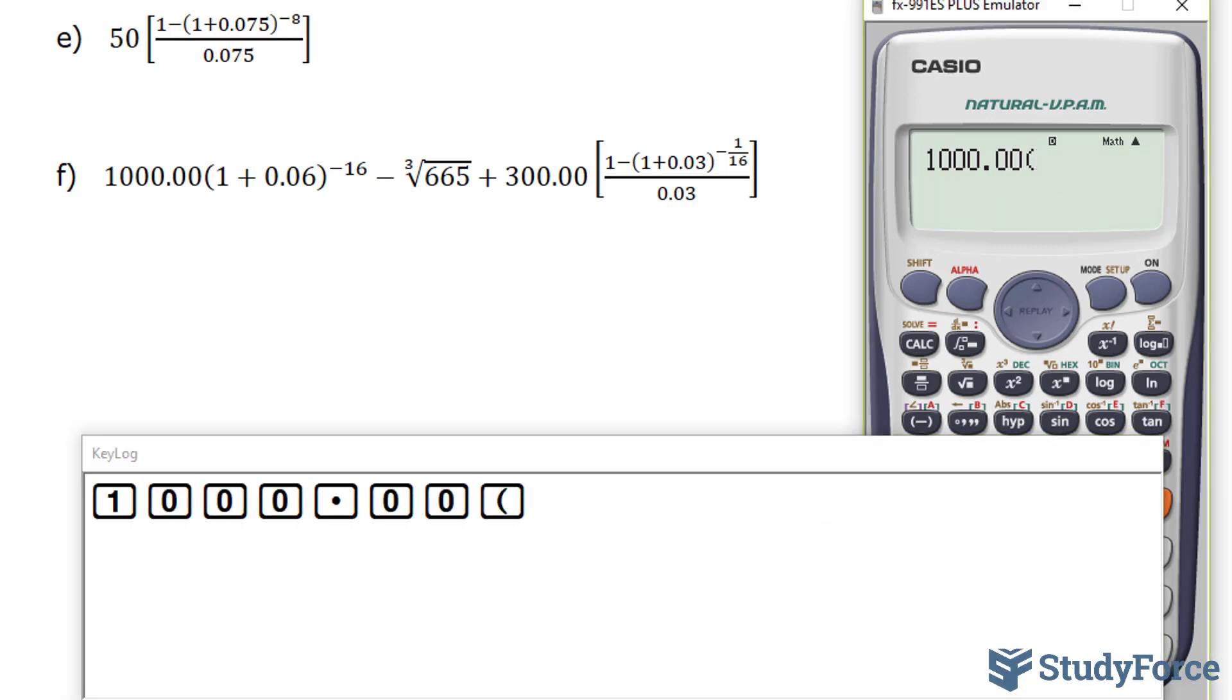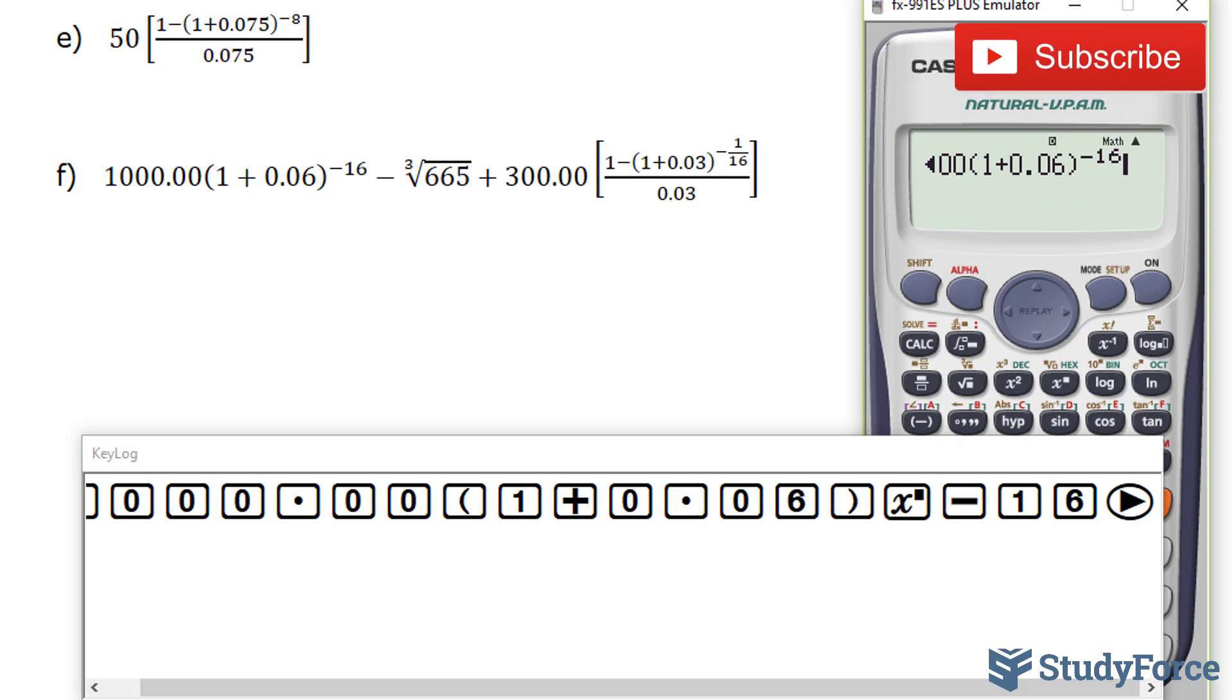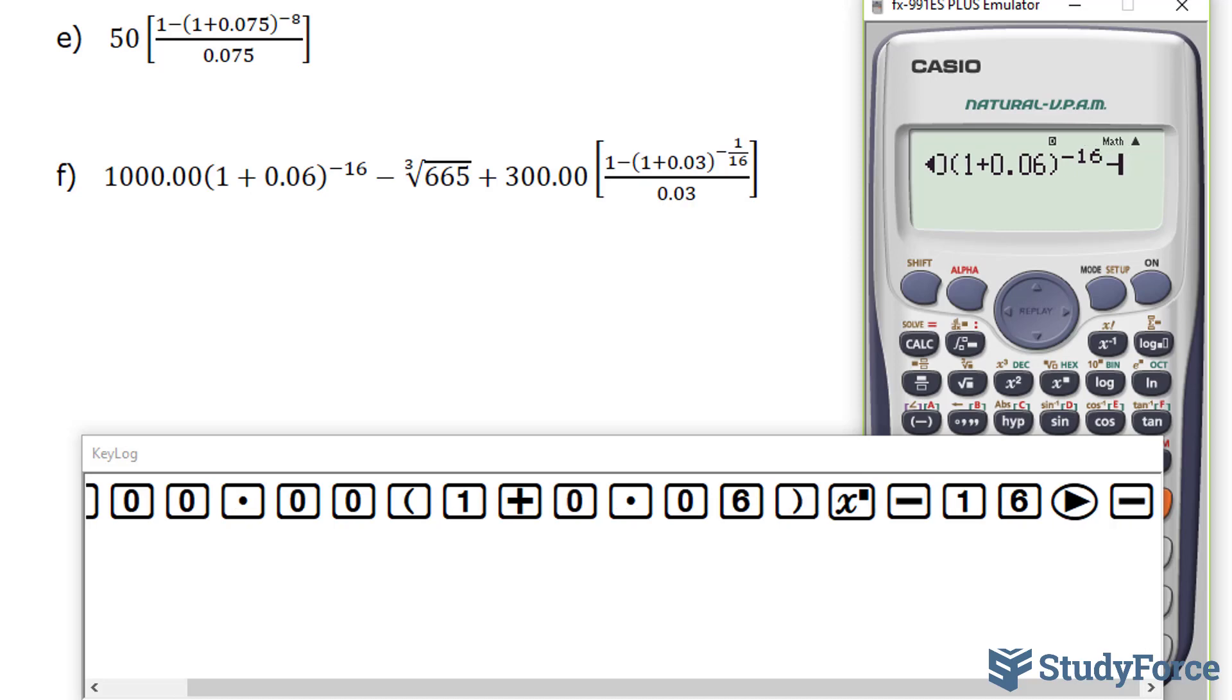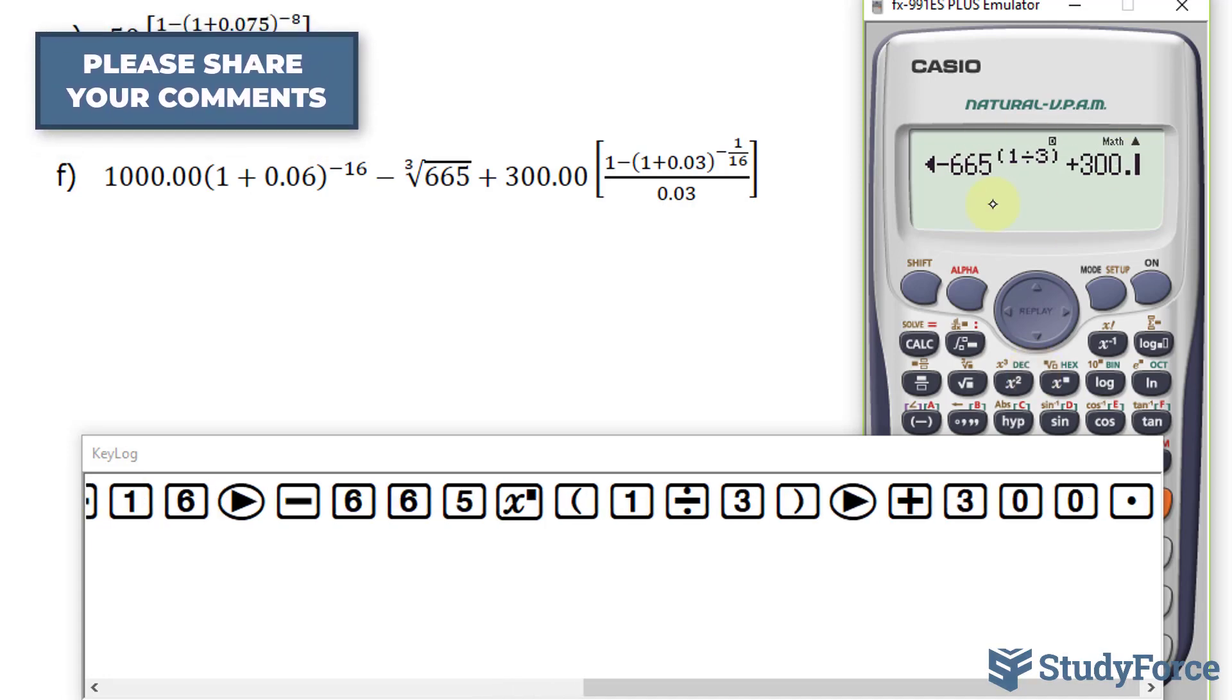1000.00, open parentheses, 1 plus 0.06 raised to the power of negative 16. Technically you should put negative 16 in brackets as I've been suggesting, but if you just have a simple number or an integer, such as negative 16, you really don't need to. Minus. And a radical with a third root or the index being 3 is the same thing as saying 665 raised to the power of a third: 1 over 3. So bracket 1 over 3. Now I do realize that on your calculator you might have a button that looks like this where you can actually input the index and the radicand, this number. But I want to show you how this is done if you were to be given a basic calculator. And so this is the method that is recommended.